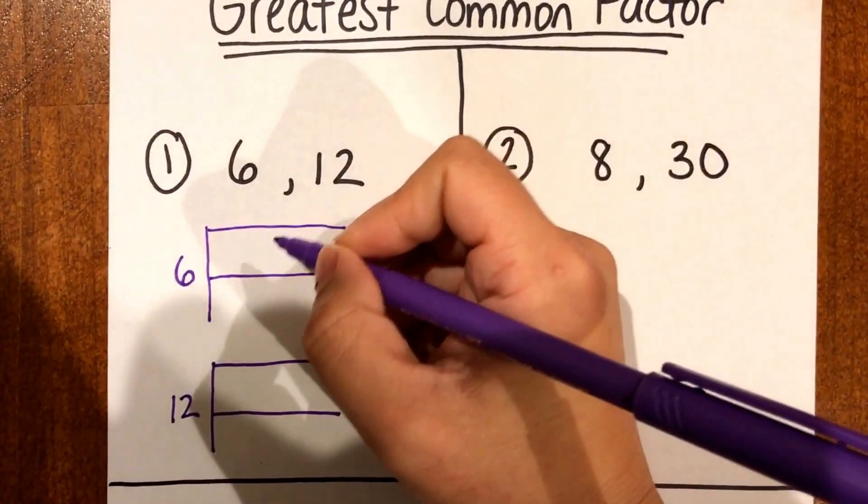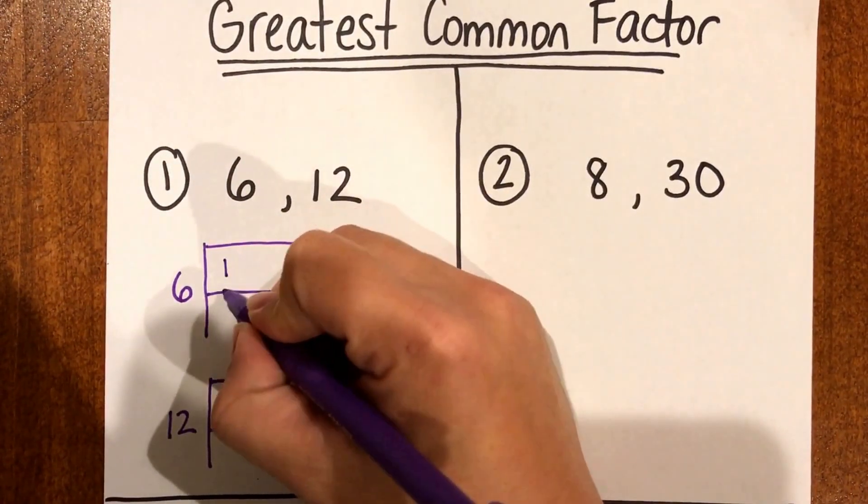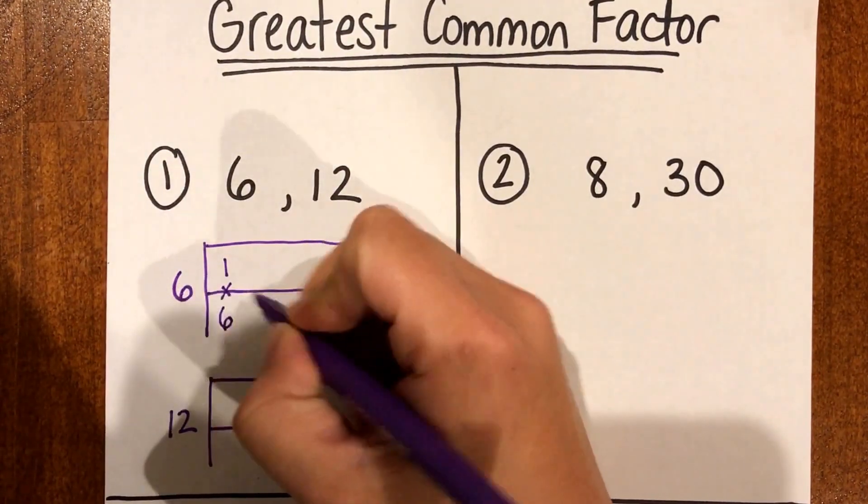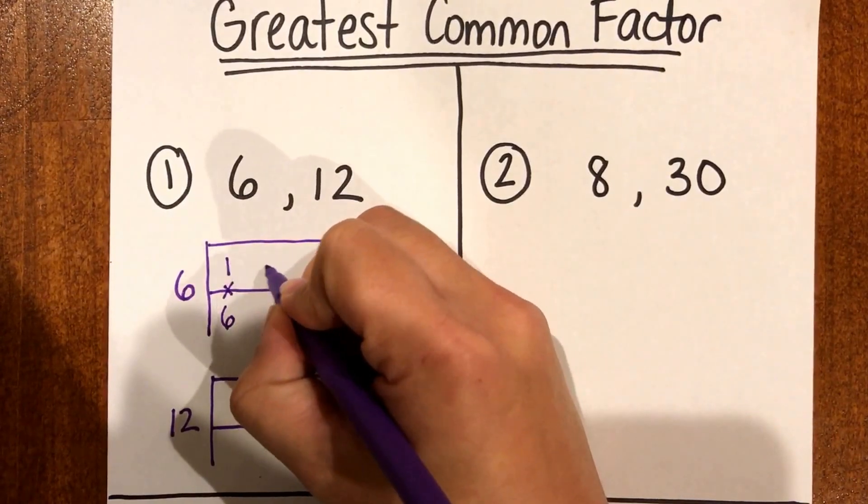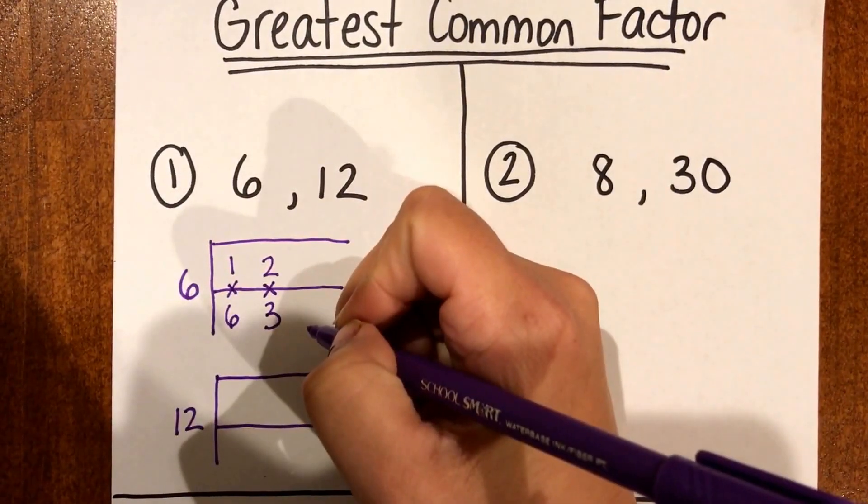So I always want to start with 1 and work my way up when I'm finding my facts. So I'm going to start with 1 and I know 1 times 6 is going to give me 6 and then I'm going to go straight up to 2 and I know 2 times 3 also gives me 6.